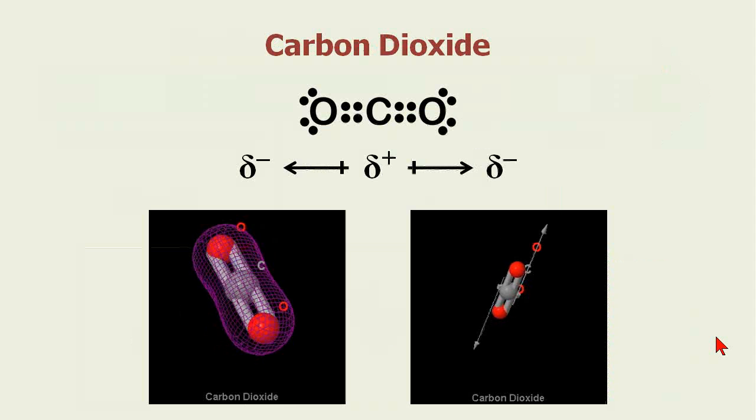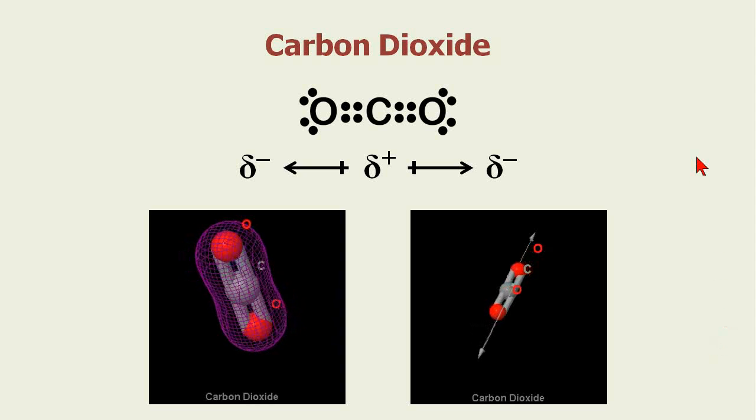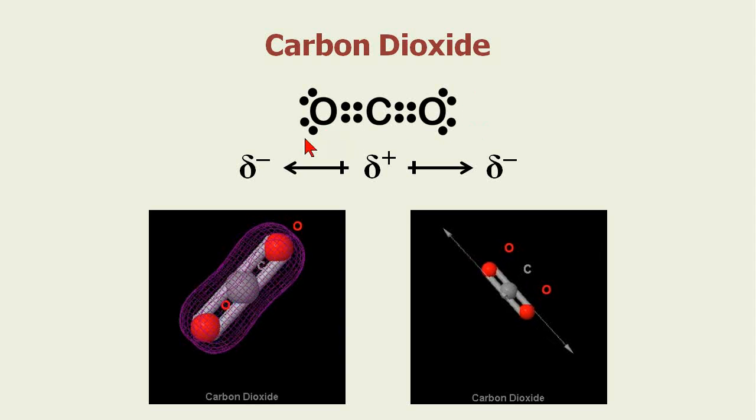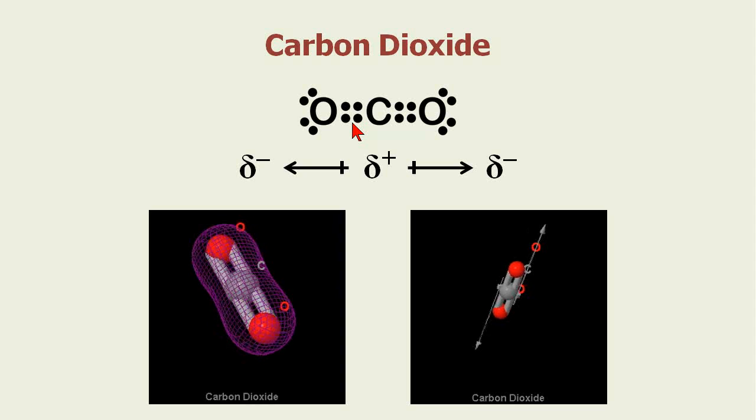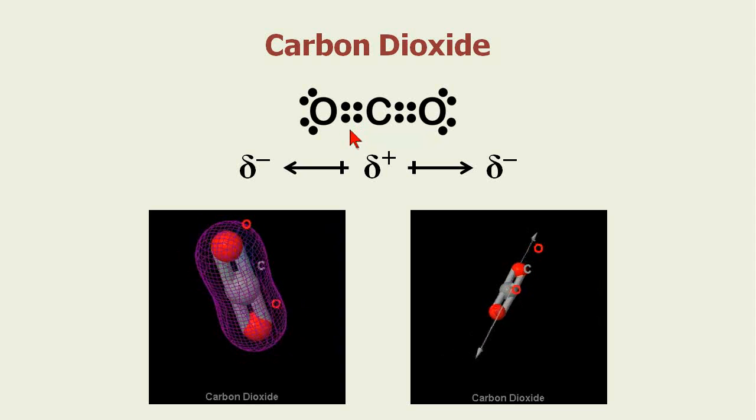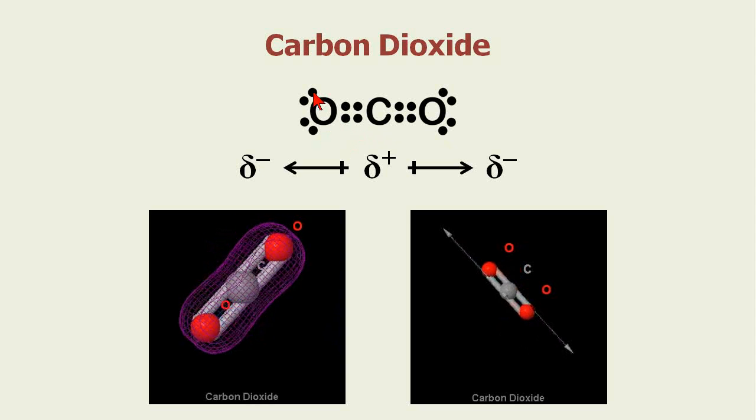Let's look at carbon dioxide again. We know that carbon dioxide, the Lewis dot diagram looks like this. What I did is I used the valence shell electron pair repulsion theory, the VSEPR theory, to show you that the electrons try to push away from each other so they're balanced.